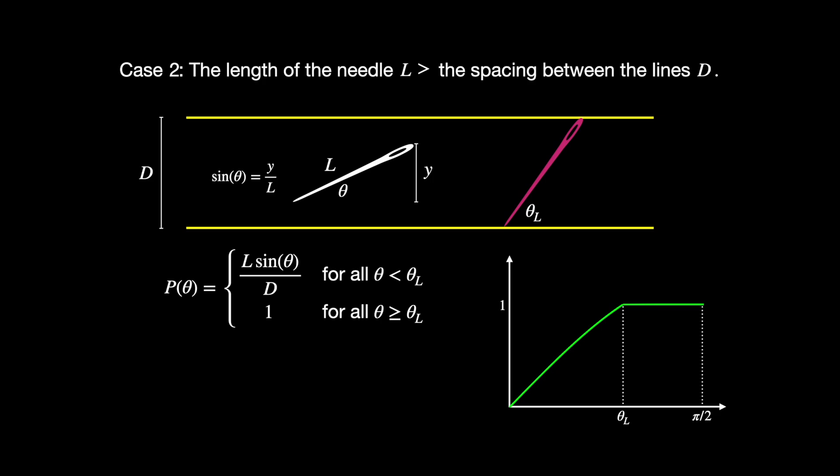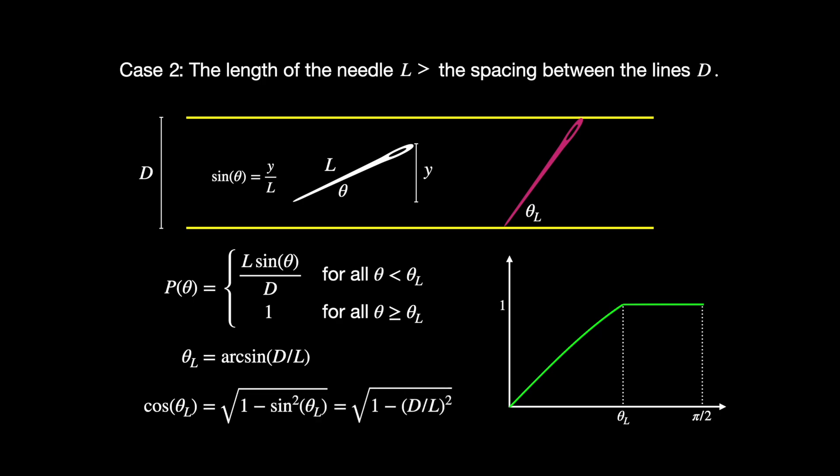Therefore, the only difference between this computation and the previous case is that our probability function is piecewise defined. The next mathematical principle is still the same — we want to average out this function across all possible angles of theta, and all angles are still equally likely. Because our function is piecewise defined, we will need to break up our computation at the critical angle. The first observation is that we can compute what that critical angle is in terms of D and L — notably, it's the arcsine of D divided by L. If you plug that into the sine function, you'll get L over D times D over L, giving a probability of 1 right at that critical angle. When we work through the computation, we will need to compute the cosine of the critical angle. Using the Pythagorean theorem, that's the square root of 1 minus the sine of that angle squared. Since the sine of the critical angle is just D over L, cosine of the critical angle will be the square root of 1 minus the ratio D over L squared.